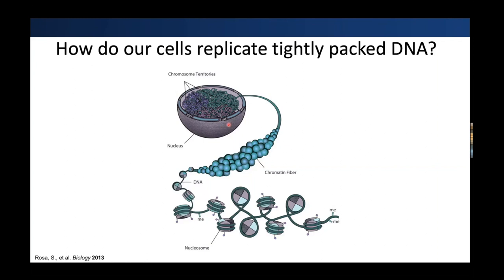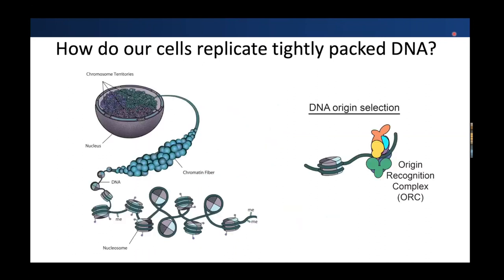This allows DNA to pack into the nucleus, but the question is how do our cells replicate this DNA after it's been tightly packed? It's hard to access some of this DNA to replicate. There are many factors involved, and one essential factor involved in efficiently replicating this DNA is the origin recognition complex, which is involved in DNA origin selection.